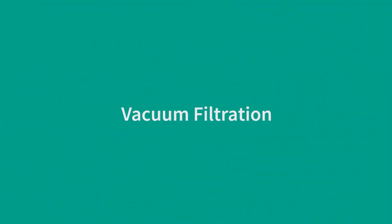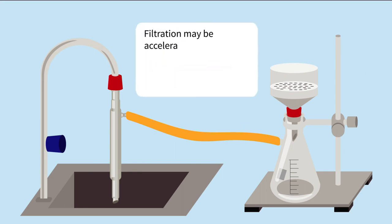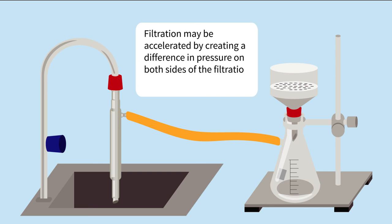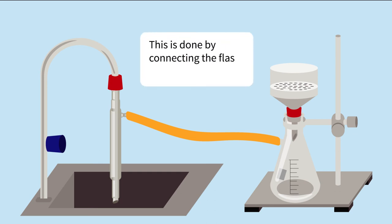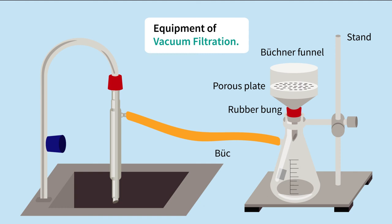Vacuum filtration: filtration may be accelerated by creating a difference in pressure on both sides of the filtration funnel. Equipment used includes a stand, Büchner funnel, porous plate, rubber bung, Büchner flask, water pump, and rubber tubing.